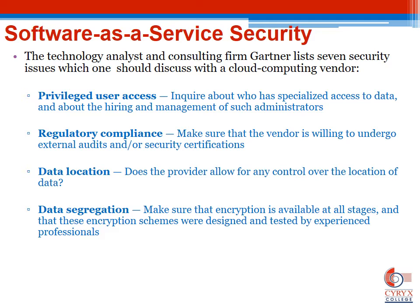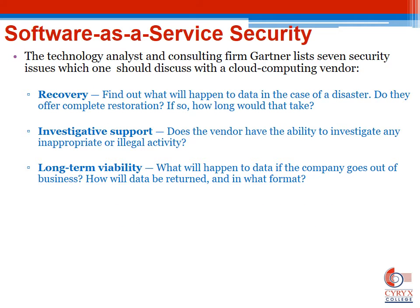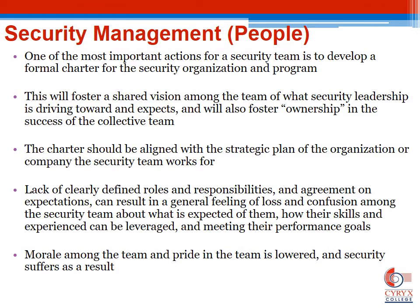When it comes to the SaaS model, the technology analyst firm Gartner has listed these issues. First, privileged user access — inquire about who has specialized access to data and about hiring and management. Second, regulatory compliance — make sure the vendor is willing to undergo external audits. Third, data locations — does the provider allow control over where data is stored? Fourth, data segregation — make sure encryption is available for all stages and that encryption schemas were properly designed. Other issues include recovery, investigative support — does the vendor have the ability to investigate illegal activities in the cloud? And long-term viability — what happens to the data if the company goes out of business?